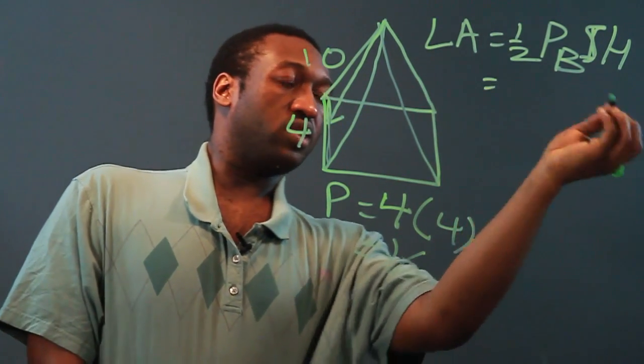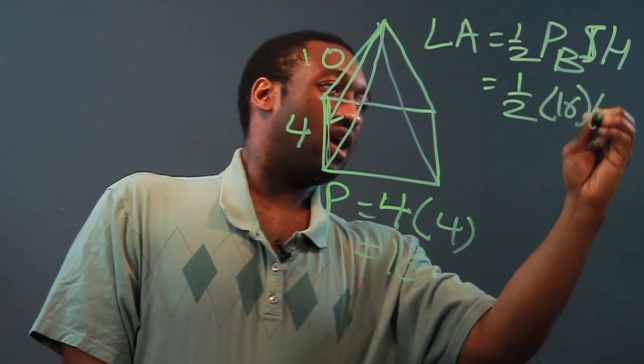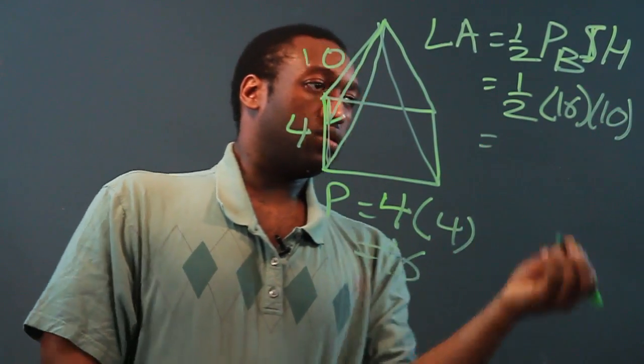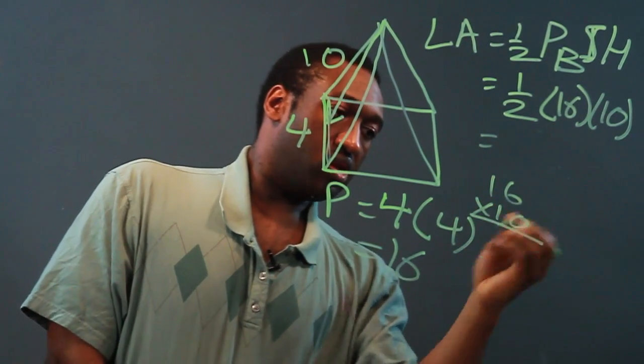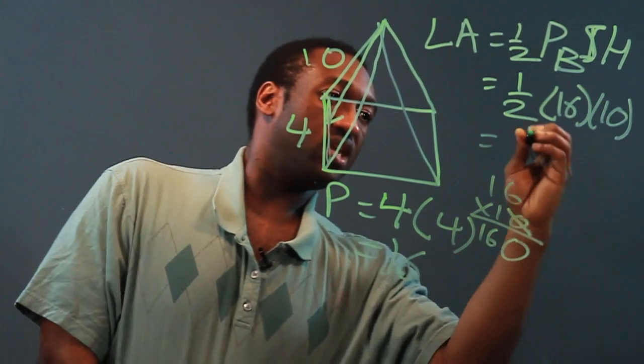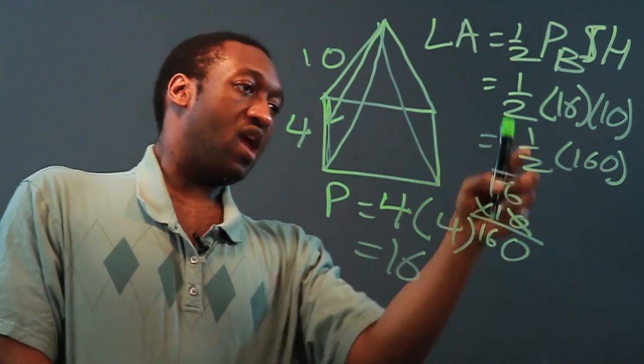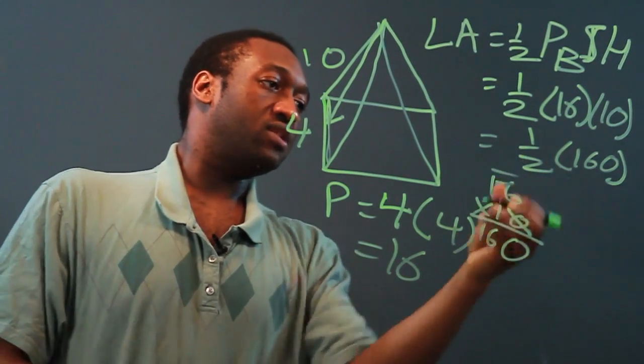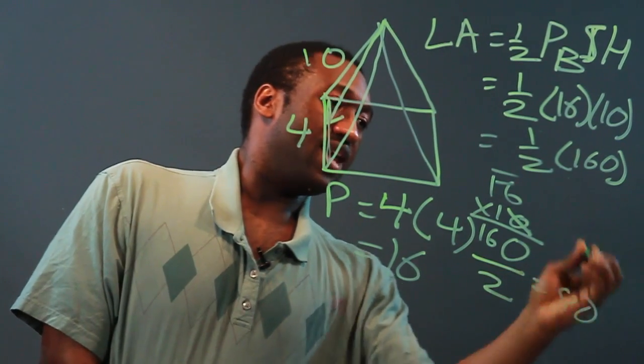So now we can plug into our formula one half of 16 times 10. Now 16 times 10, cut out the zero, 16 times one is 16, add it back is 160. Multiply by half is the same as divide by two. So when we divide 160 by two we get 80.